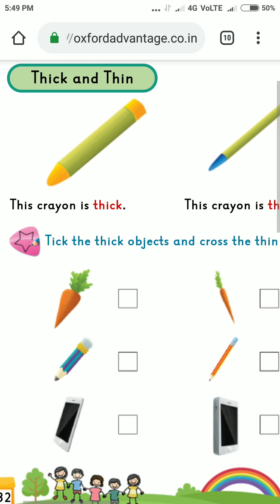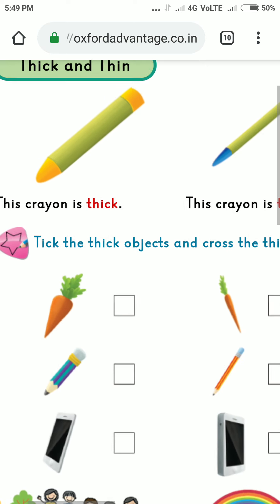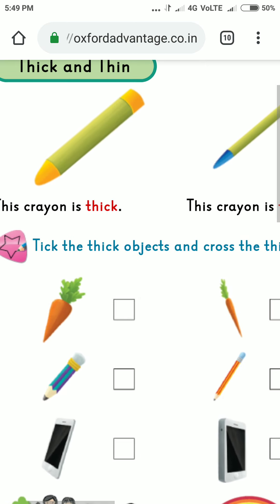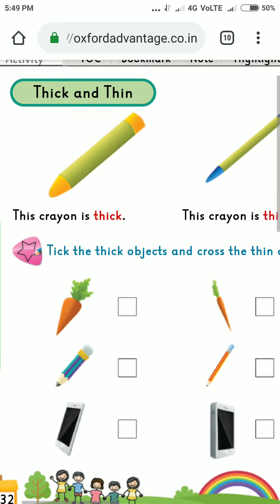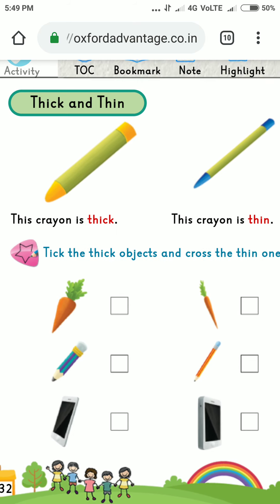Thick and thin — you can see here two crayons are drawn. One crayon is thick and the other crayon is thin. This is the difference between both crayons: one is thick and the other is thin.